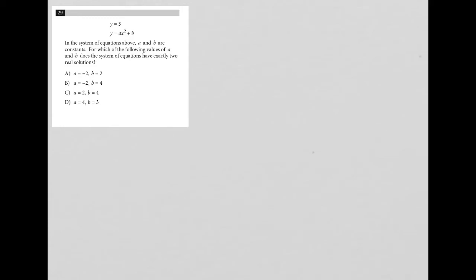This question says Y equals 3 and Y equals AX squared plus B. The information in the question tells us that in the system of equations above, A and B are constants. For which of the following values of A and B does the system of equations have exactly two real solutions?